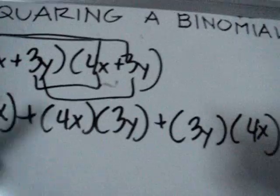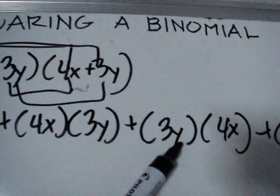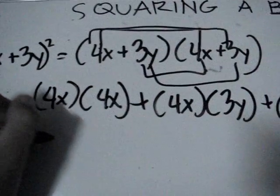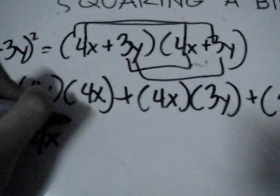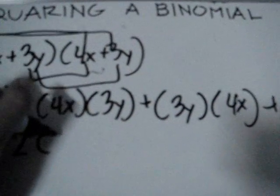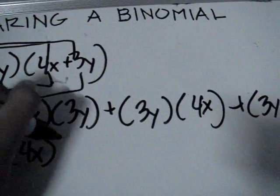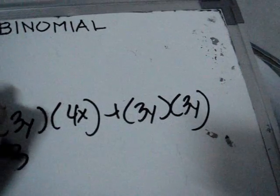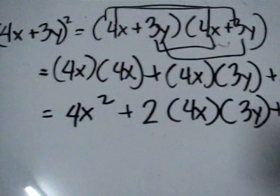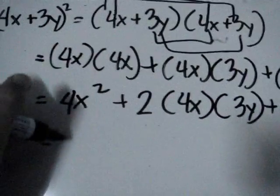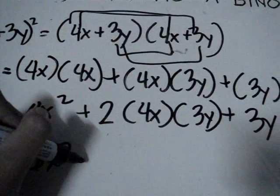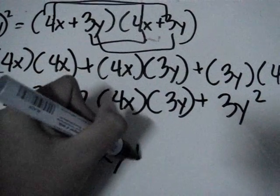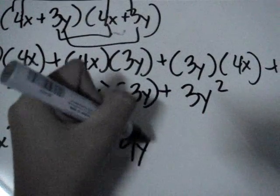Notice that the outer term and inner term have the same variable. To simplify, the expression becomes 4x squared plus 2 multiplied by 4x multiplied by 3y plus 3y squared. The result is 16x squared plus 24xy plus 9y squared.